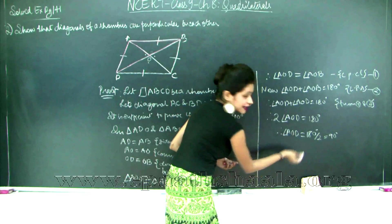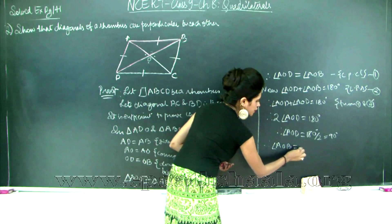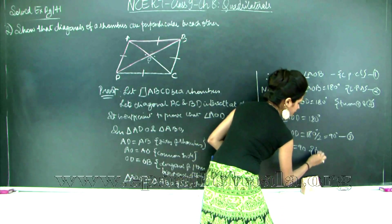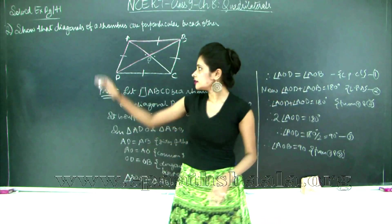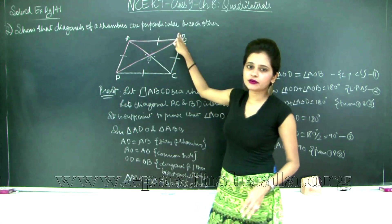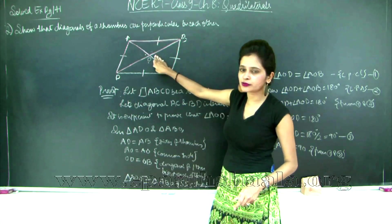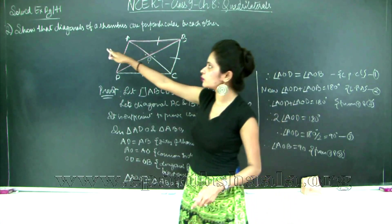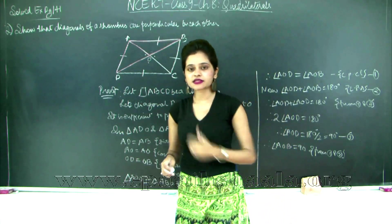So angle AOB is 90 degrees, and therefore angle AOD is also equal to 90 degrees — from statements 1 and 3. These two angles are 90 degrees, and since the remaining angles also form linear pairs with them, they are each 90 degrees as well. Therefore, we have proved that the diagonals of a rhombus are perpendicular to each other. This completes solved example 2.